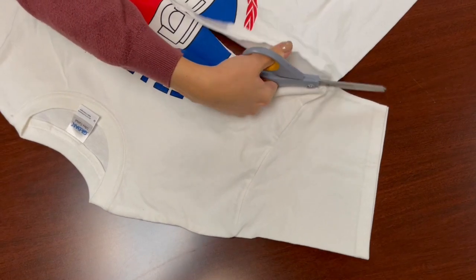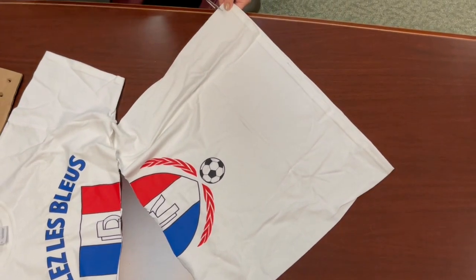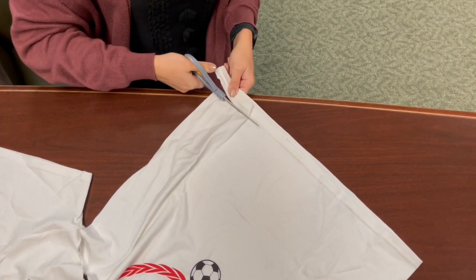You're then going to remove the sleeves from the bottom portion of your t-shirt and take the bottom portion of the t-shirt to cut the strips. Cut one inch strips of t-shirt.